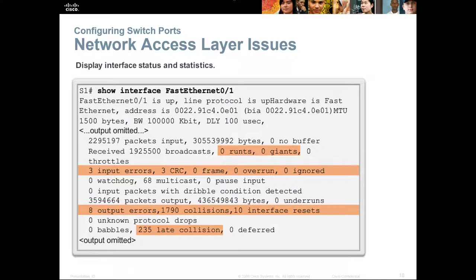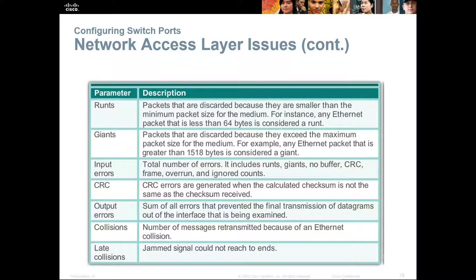For network layer access issues, perform a 'show interface' on the specific interface to see errors such as: runts (packets discarded for being smaller than minimum packet size), giants (oversized packets), input errors (total errors including runts, giants, no buffers, CRC, and overrun counts), CRC errors (generated when the checksum calculation doesn't match), output errors (all errors preventing final transmission), collisions (messages retransmitted due to Ethernet collisions), and late collisions.